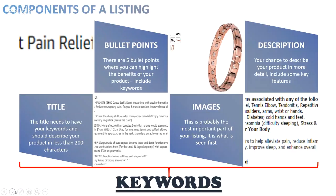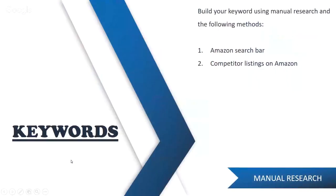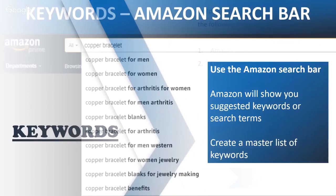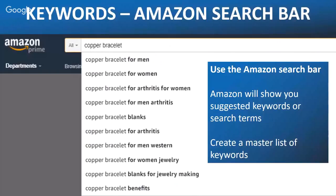Keywords are the underpinning force behind everything. So let's jump into keyword research. There are two ways I do my keyword research — manually and with tools. Let's look at the manual research first. The first place to start is actually on the Amazon search bar. I've got a copper bracelet that I'm searching for, and if you just type 'copper bracelet' it will give you the most popular search terms that Amazon sees.